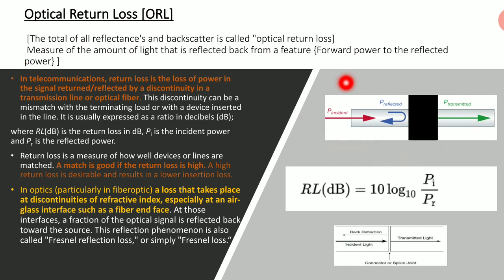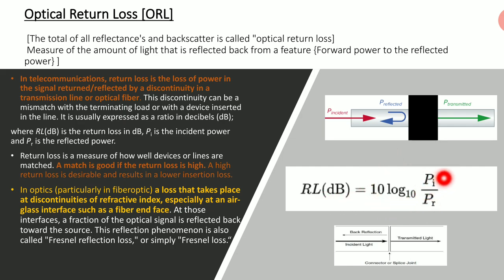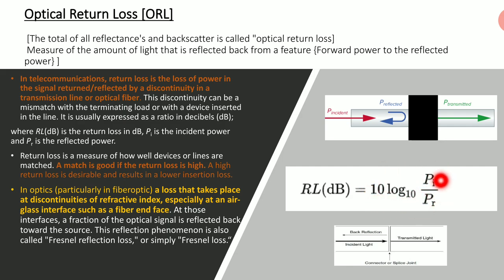Suppose this is an optical medium and there is a discontinuity in the medium, like splicing, a connector, or a laser-to-fiber interface. There is incident light, reflected light, and transmitted light. Optical return loss can be calculated by the formula: 10 log₁₀ (incident power / reflected power). When incident power and reflected power are in milliwatts, this formula gives return loss in dB.